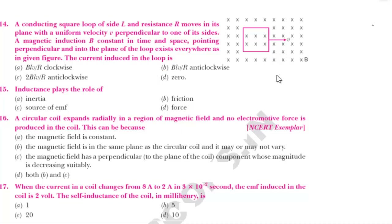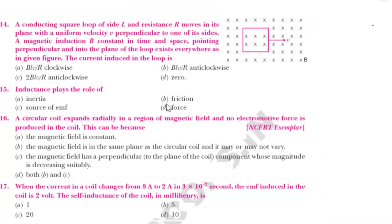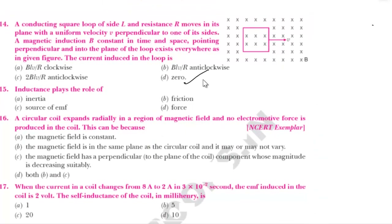Is there any change in flux happening? There is no change in flux. If there is no change in flux, no current will flow. So the induced current is equal to zero. Since the magnetic field exists everywhere and is uniform, there is no change in flux — induced current equals zero.